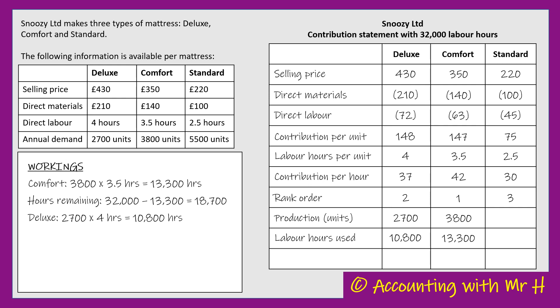We did have 18,700 hours but we used 10,800 making the Deluxe, so now we've only got 7,900 labour hours remaining. The demand for the Standard is 5,500 units and they take two and a half hours each to make. So 5,500 units multiplied by two and a half hours would take 13,750 hours - we can't do it, we've only got 7,900 hours left.